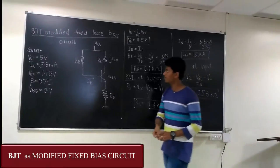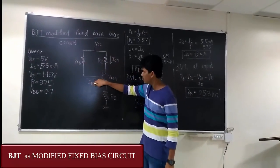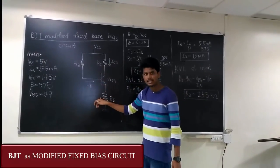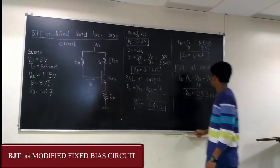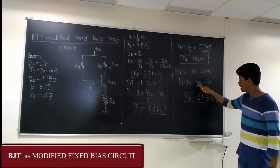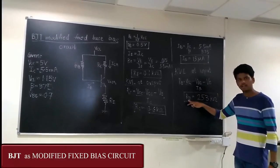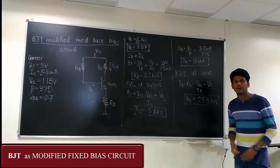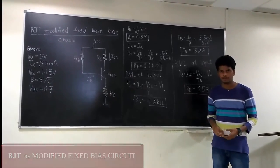Applying KVL at the input, we get VCC minus IB*RB minus VBE minus IE*RE is equal to 0. Note that IE*RE is VE. That gives us RB is equal to VCC minus VBE minus VE upon IB. That gives us the value of RB as 253 kilo ohm. Now, let us look into the implementation of the modified fixed bias in the breadboard.